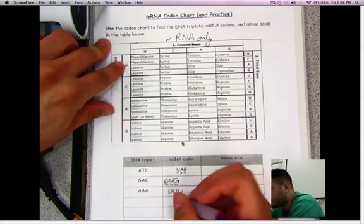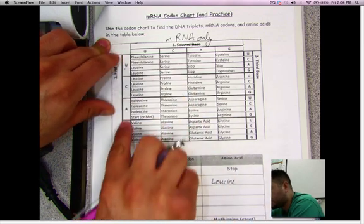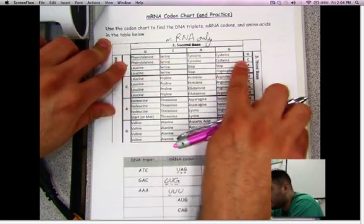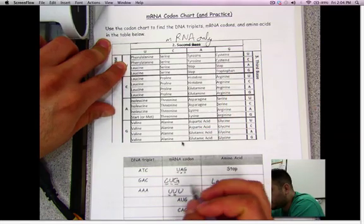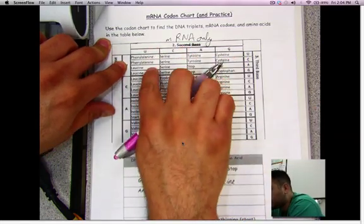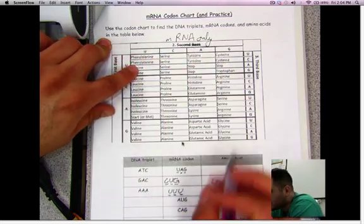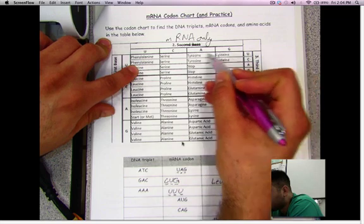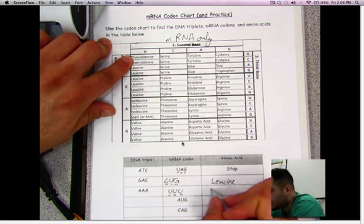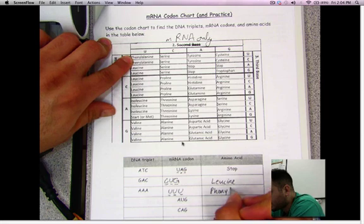So the first one is U, and the first base is U. So I look where it says first base, here it is, it's U. I'm in this row now. The second base is U, right here, so now I know I'm in this box. And then the third base is U, so I'm going across, and it's phenylalanine. That's the amino acid.